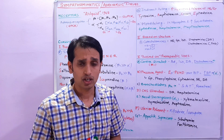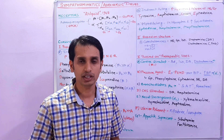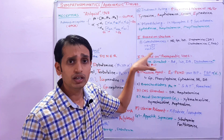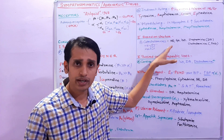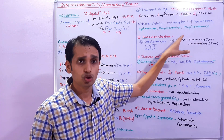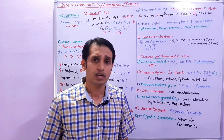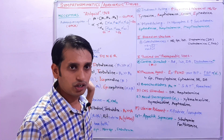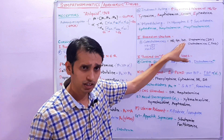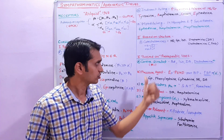Now coming to classification based on structure. Adrenergic drugs are divided into two parts: catecholamines and non-catecholamines. Catecholamines are drugs which have a catechol nucleus in their compound. The major five catecholamine drugs are norepinephrine, epinephrine, isoprenaline, dobutamine, and dopamine. Other drugs such as ephedrine and amphetamine are non-catecholamines.